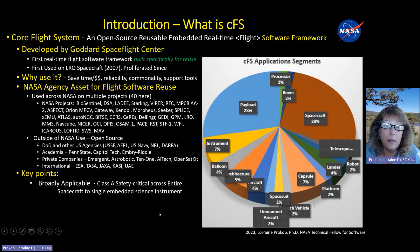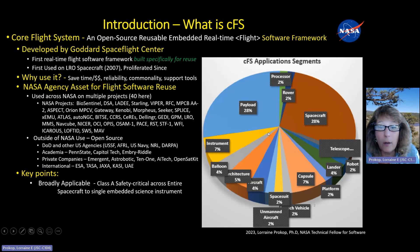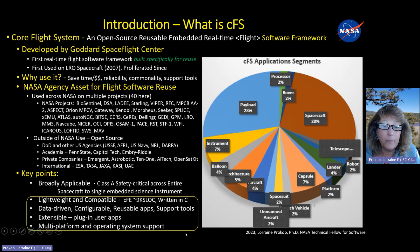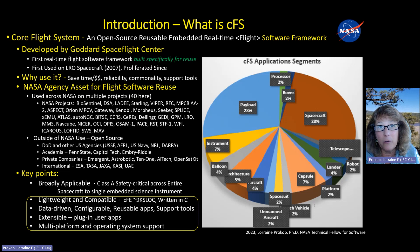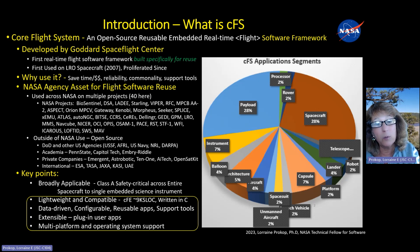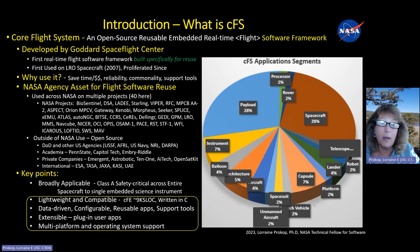Some key points: it is broadly applicable. As you see on the pie chart here, it can be used for Class A safety-critical human-rated code across an entire spacecraft, or could be used just for a single instrument plugged into a more complex system. In general, it's lightweight and compatible. It's written in C — about 9,000 lines of code for the CFE layer. It's configurable and data-driven, has a bunch of reusable apps and support tools. As a user, you primarily configure the system and plug in your apps, similar to plugging in apps on a phone. It works on multi-platform hardware and operating systems.